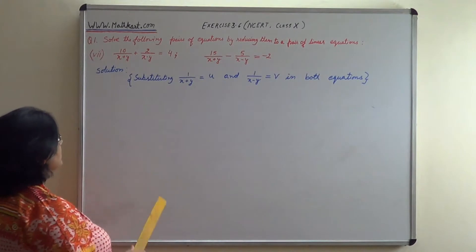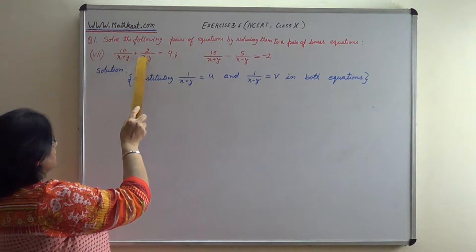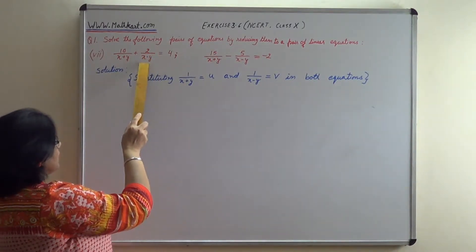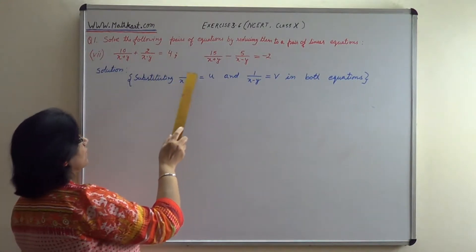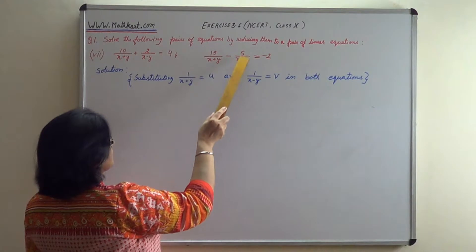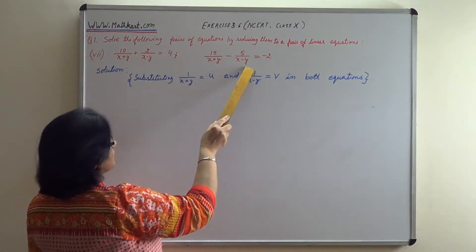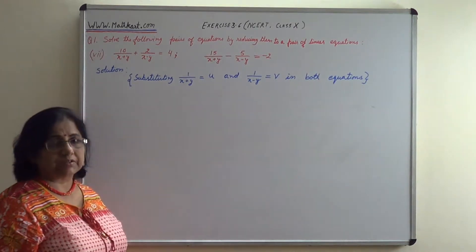10 upon x plus y plus 2 upon x minus y equals 4. This is the first equation. And 15 upon x plus y minus 5 upon x minus y equals minus 2. This is the second equation.